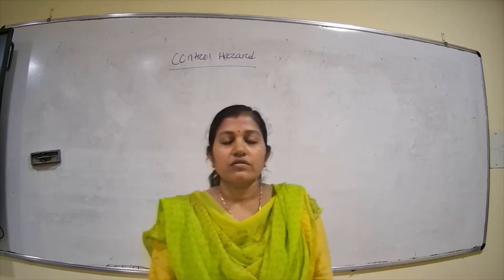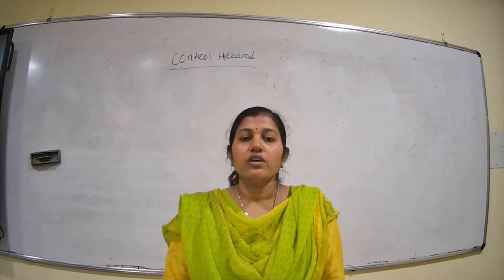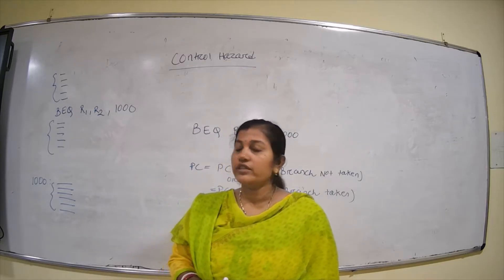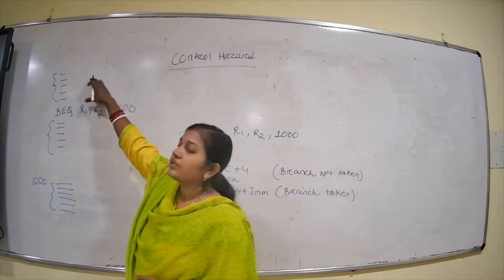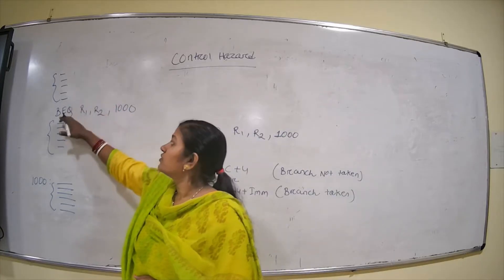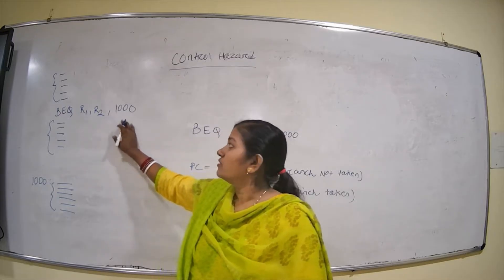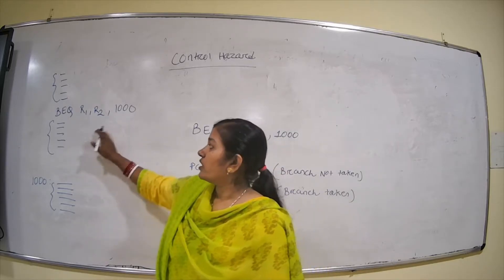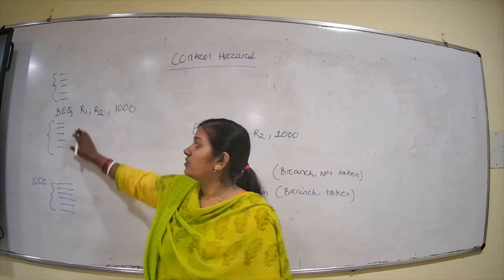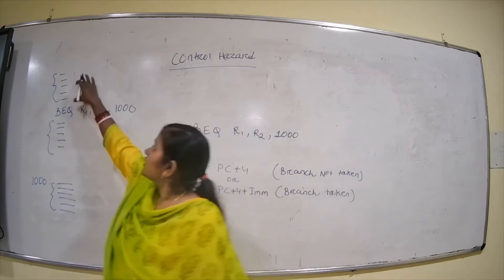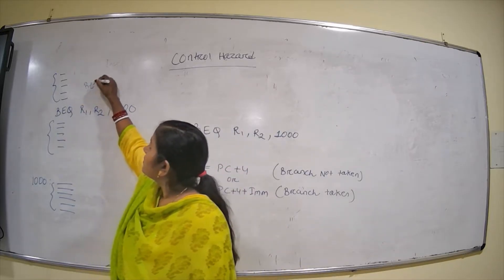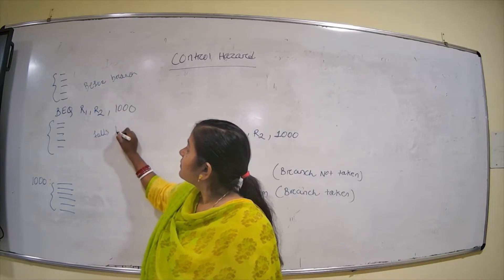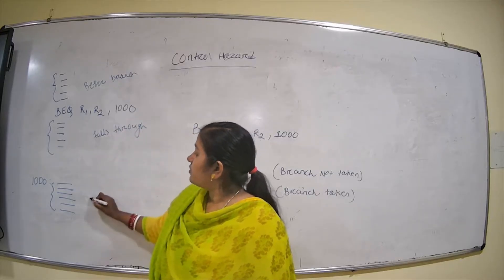Today we will discuss control hazard and its solution. Control hazard occurs because of branch instructions. Let's say we have a program with a set of instructions before the branch instruction. The branch instruction 'branch equal to r1, r2, 1000' means if r1 equals r2, it will jump to memory location 1000. The fall-through part executes if branch is not taken, and the target part executes if branch is taken.